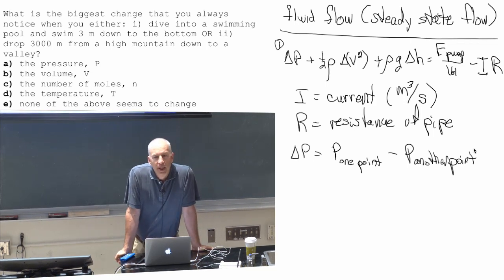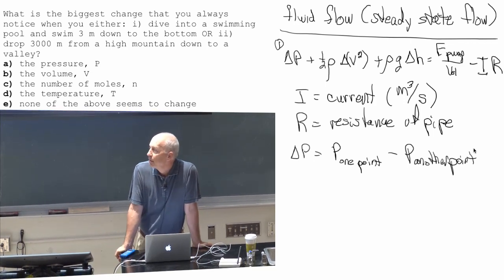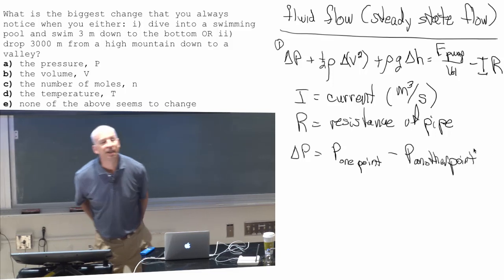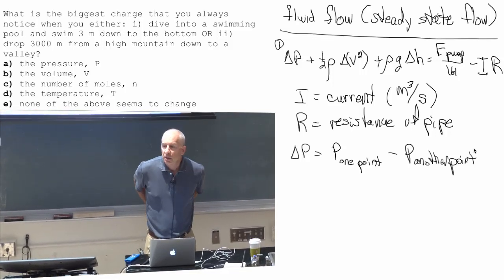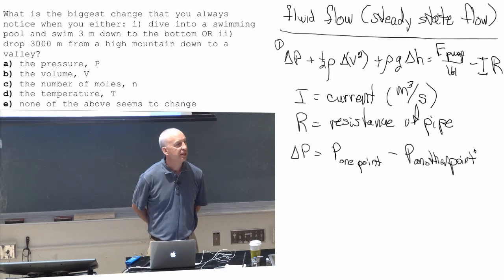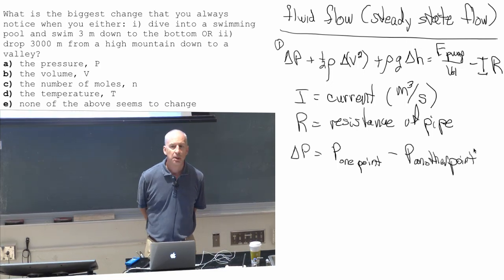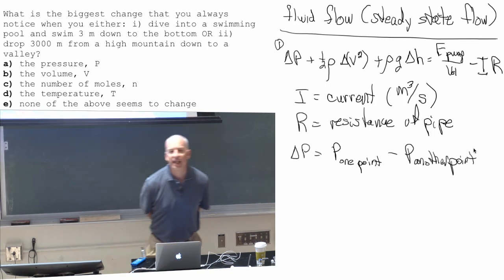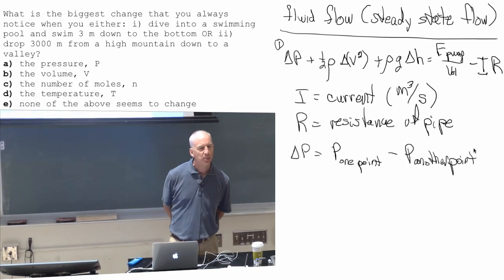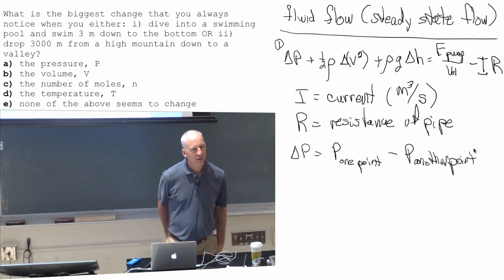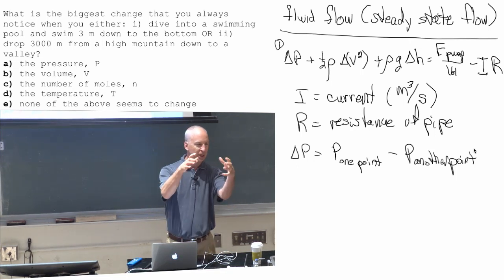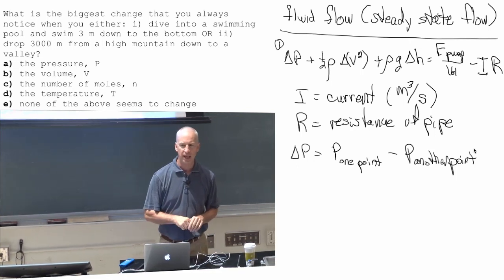If you swim three meters down in a pool, then your gravitational potential energy has gone down. What about these other things? Has the kinetic energy of the water in the pool changed? Is the water in the pool at the top of the pool moving at all?